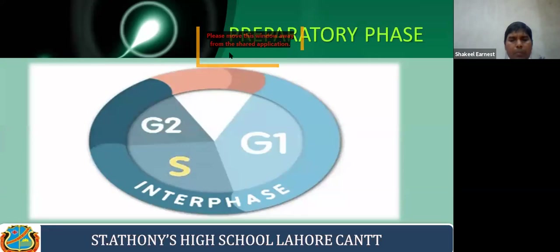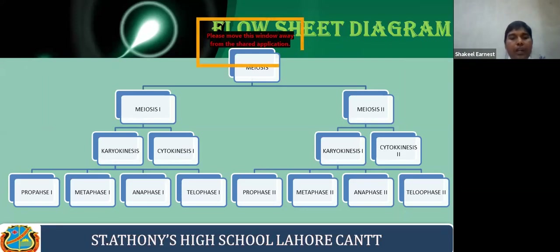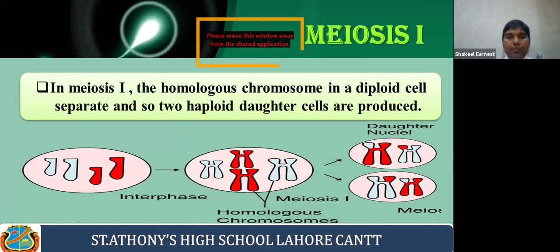We also discussed the preparatory phase of meiosis, which is similar to mitosis. Here is the flow sheet diagram we discussed. The meiosis process can be divided into two divisions: meiosis one and meiosis two. Meiosis one is further divided into karyokinesis one and cytokinesis one, and karyokinesis one is further divided into prophase one, metaphase one, anaphase one, and telophase one. Similarly, meiosis two is divided into karyokinesis two and cytokinesis two.